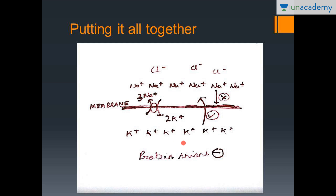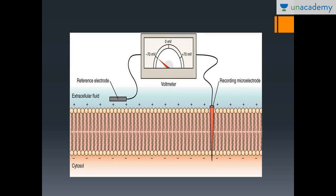If you get a question asking for the most important ion in generation of the resting membrane potential, it is potassium. The channel that uses energy is the Na+K+ATPase, which sends out three sodium and gets in two potassium — remember three out, two in. In the end, a resting membrane potential develops where you have a negative charge on the inside and a positive charge on the outside, measured by a voltmeter as minus 70 millivolts. That is it for this lesson — thank you for watching.